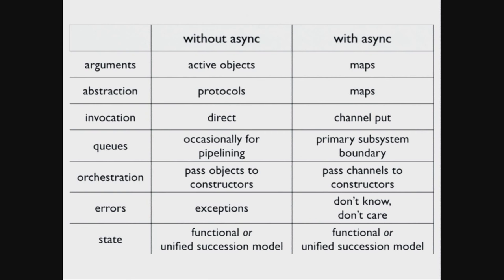How do you model state in this world? If you go back and look at the examples I showed earlier, they were actually purely functional. Stateful behavior emerged by having a loop where you could put things in and then put things out on channels, but the internal state was recurring over values — purely functional. That is really great. And that's something you could do in any language. But in Clojure, you can also use all of Clojure's other concurrency primitives — what I call the unified succession model: atoms, agents, reference types — all those types you can use in conjunction with this.